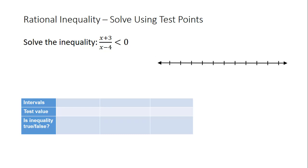In this video, I'll demonstrate how to solve a rational inequality using test points. We want to solve the inequality, the quantity x plus 3 divided by the quantity x minus 4 is less than 0.